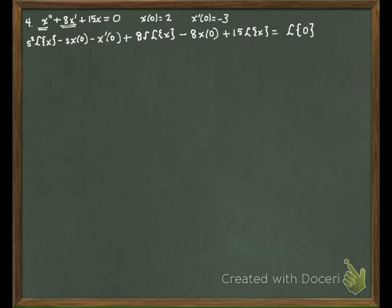Let's group the terms. We get s squared plus 8s plus 15 times Laplace of x. When we substitute x of 0 equals 2, this term becomes minus 2s. This one becomes plus 3, and this one becomes minus 16. The Laplace of 0 is zero.